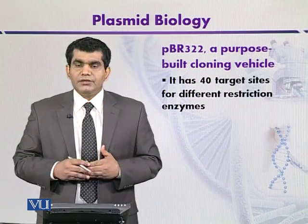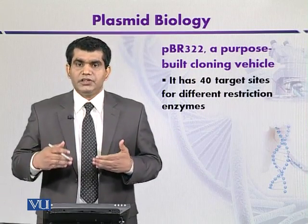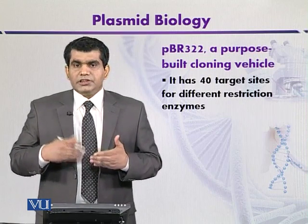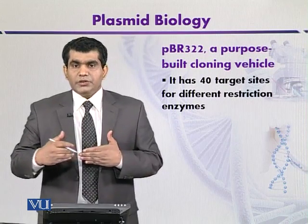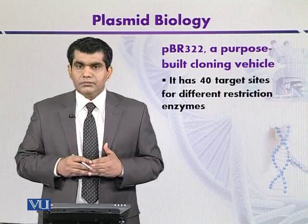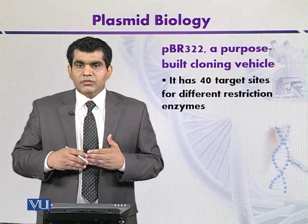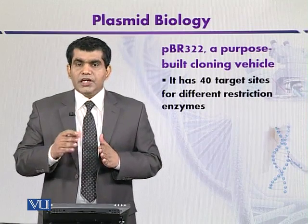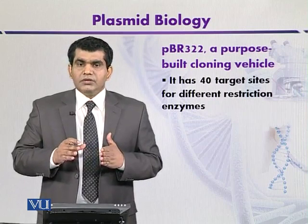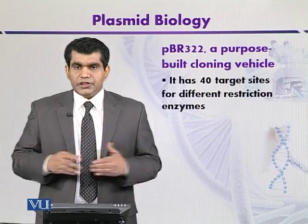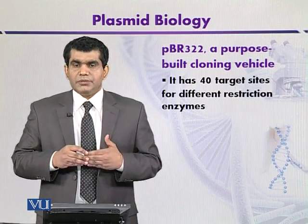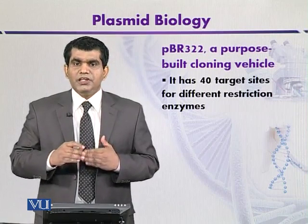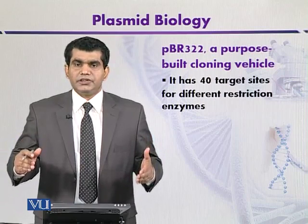PBR322 is an excellent example of an artificially created cloning vector. It contains several desirable properties. It is suitable for gene cloning because it has around 40 target sites for different restriction endonucleases, and mostly these enzymes cut once at their specific target site, so multiple target sites for a particular restriction enzyme are not present.